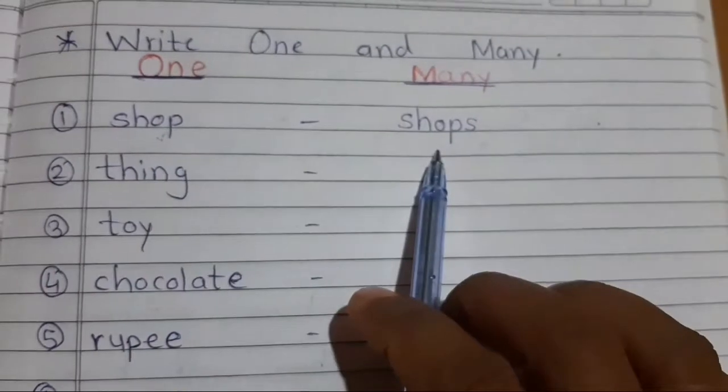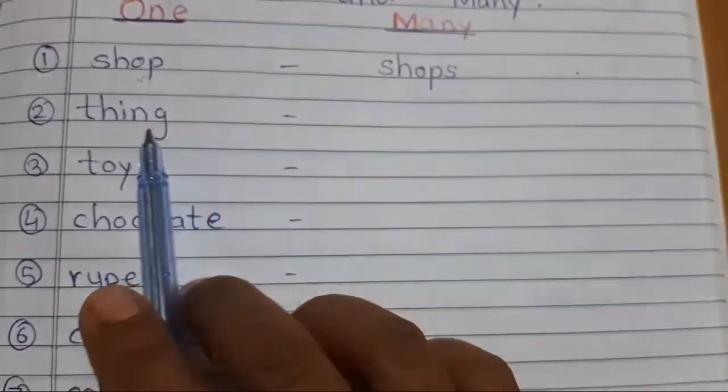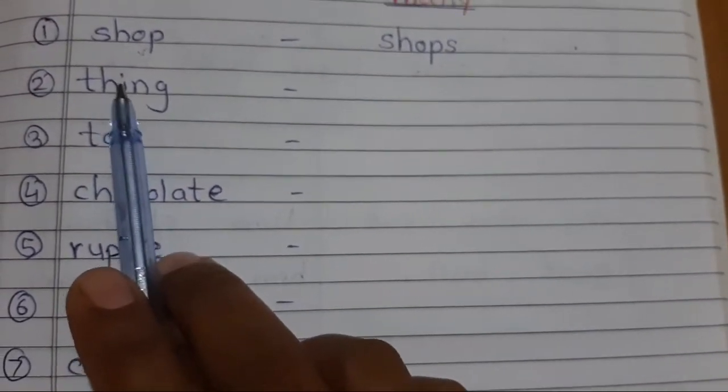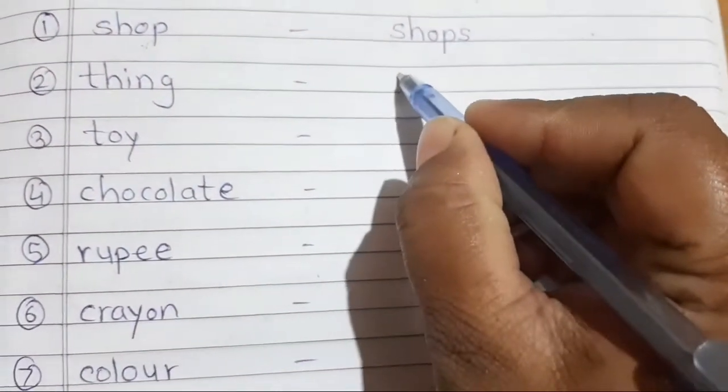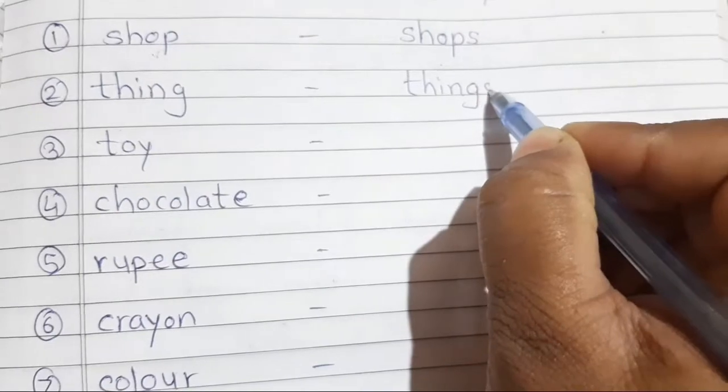One shop, many shops. Then same like this where you have to write all. Thing, one thing, many things. T-H-I-N-G-S, things. Then toy. Toy, toys.